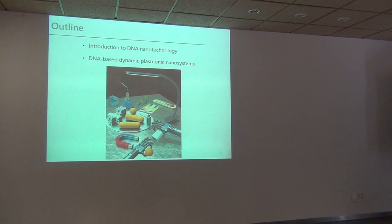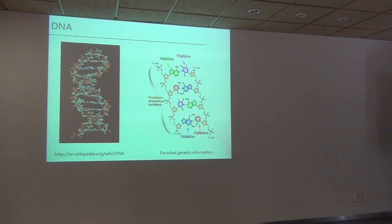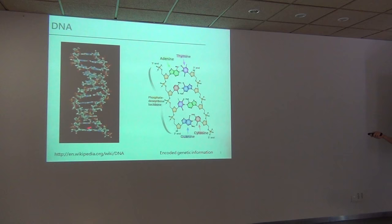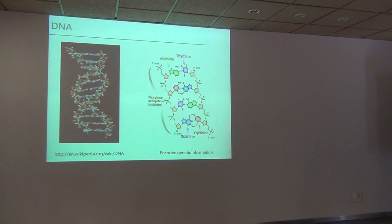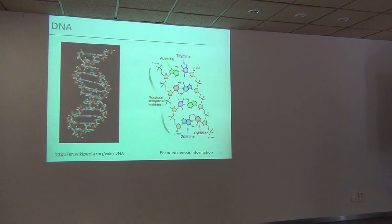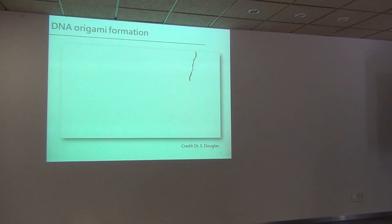I will give you a very short introduction to the field of DNA nanotechnology, then show you our recent efforts along the direction of DNA-based dynamic plasmonic nanosystems. So this is the DNA we know. If we take a close look at the DNA molecule, it has these two long polymer backbones made of sugar and phosphate groups, and DNA has four nucleobases: A, T, C, and G. Therefore DNA is an excellent genetic material.